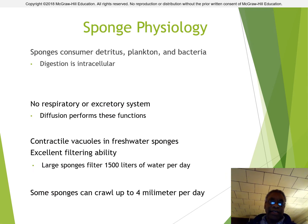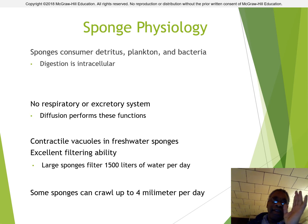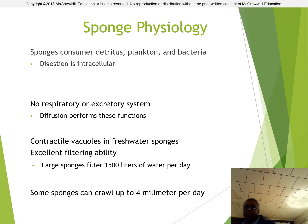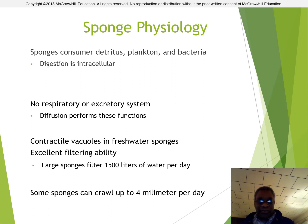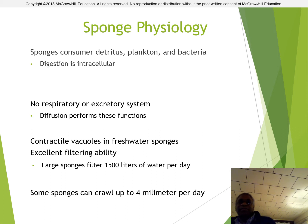Sponges consume detritus, plankton, and bacteria — whatever is found in the water column that's edible. There is no real respiratory or excretory system; just diffusion into and from the environment serves that purpose. Their body wall is only about two or three layers of cells thick, and they have water passing through their body in a lot of places, making it very easy for them to pick up metabolites and expel waste products just by sheer diffusion. Large sponges can move about 1,500 liters of water per day. Some sponges have the ability to move very slowly — the fastest can crawl up to four millimeters per day.